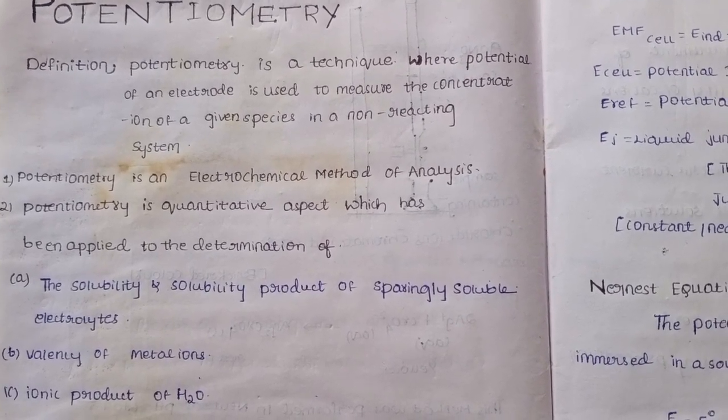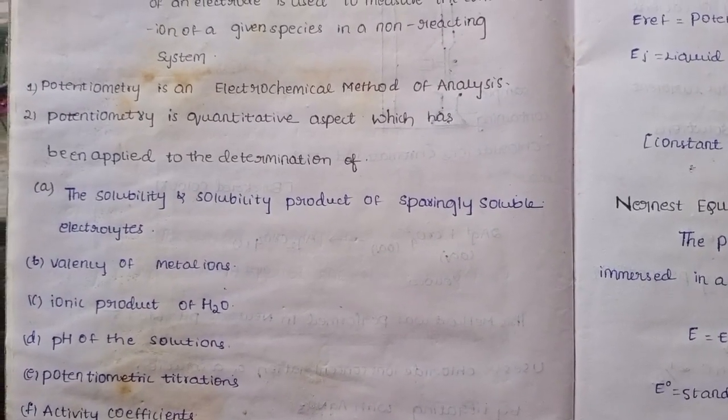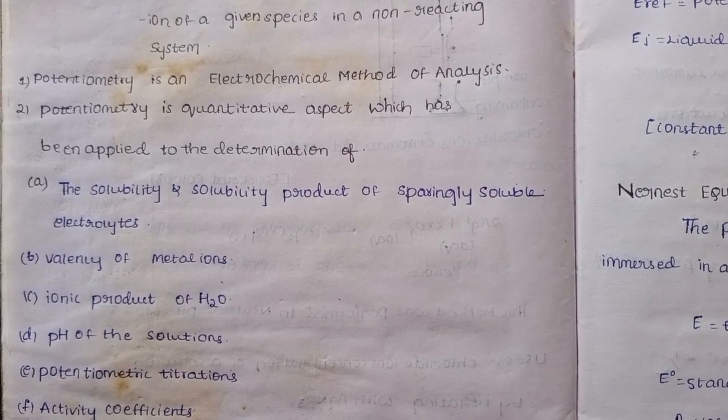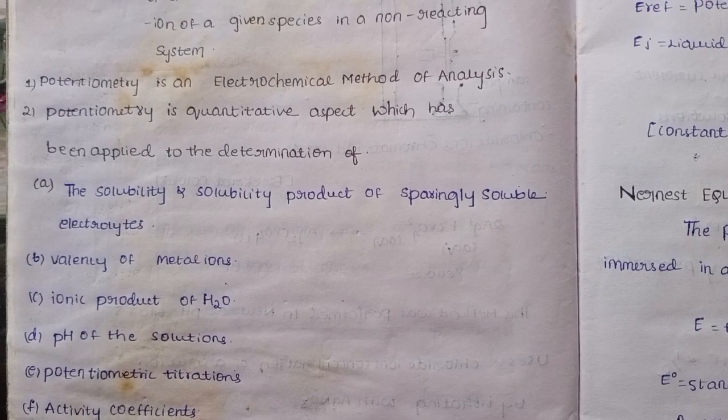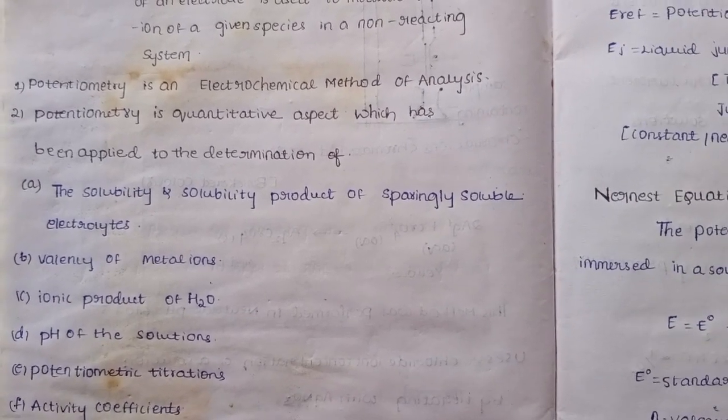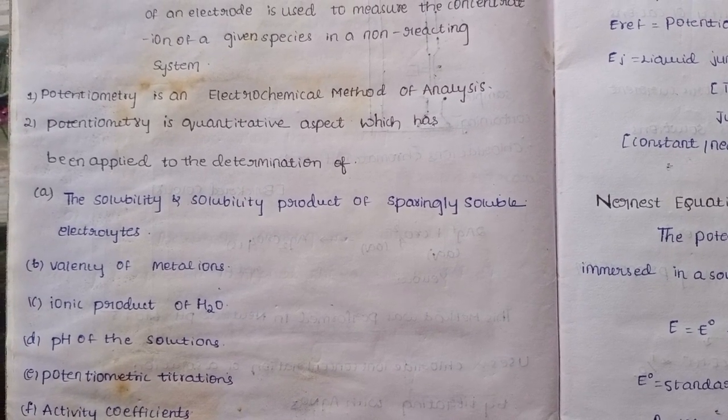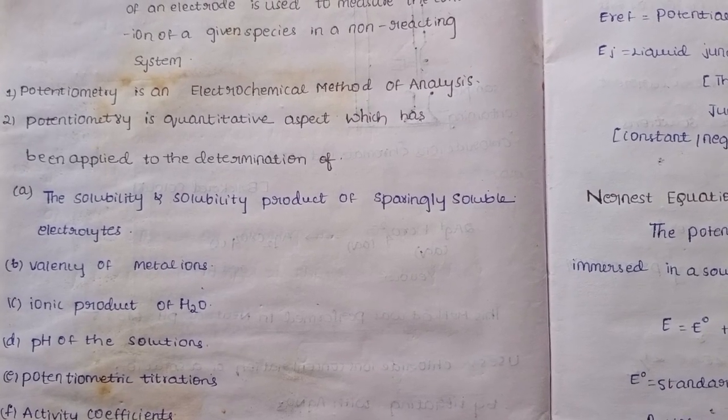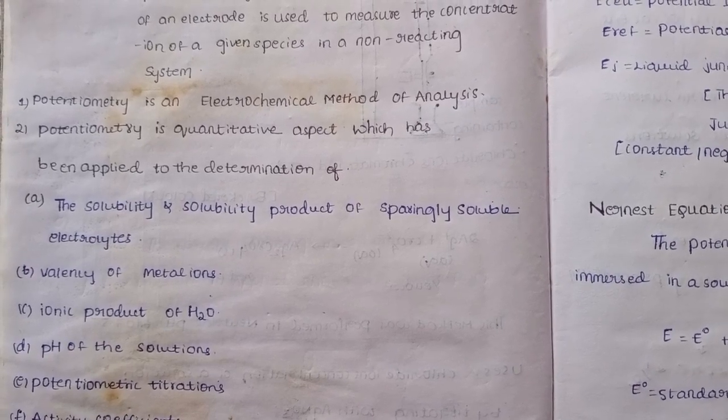Potentiometry is an electrochemical method of analysis. Potentiometry is quantitative aspect which has been applied to the determination of various parameters.